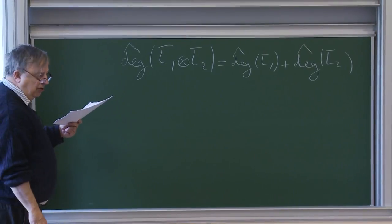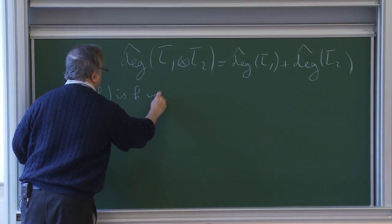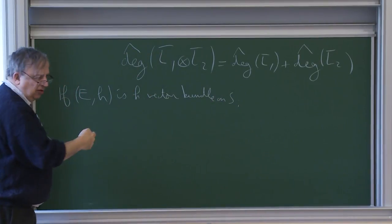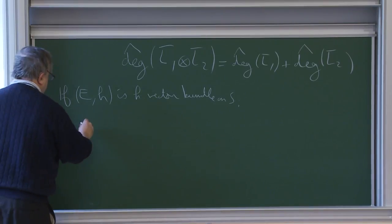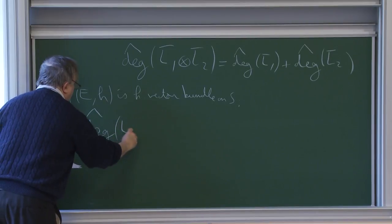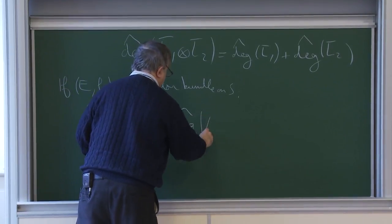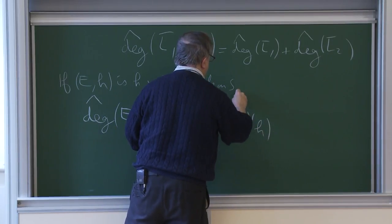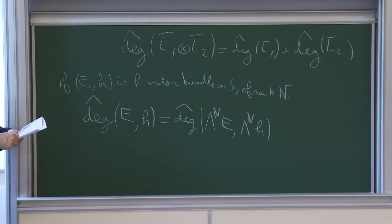We can extend this definition to higher rank bundles. If E is a Hermitian vector bundle on S — E is not assumed to be rank one, it can be higher rank — we define the degree of this pair as the degree of the line bundle which is the determinant: lambda^n E with metric lambda^n H, where n is the rank of E.